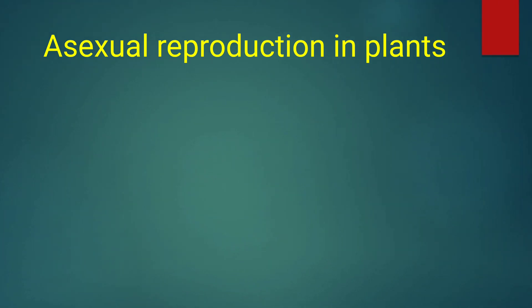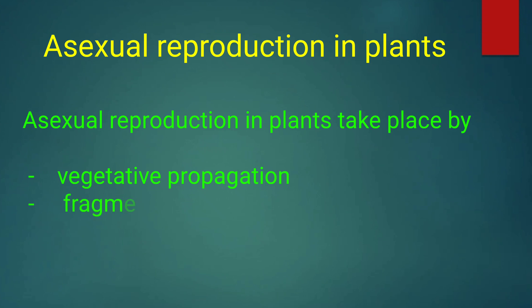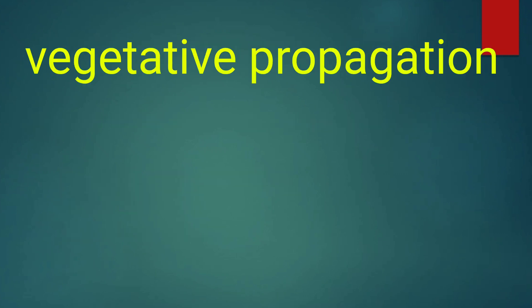Hello friends, welcome to my channel. In this video we discuss about asexual reproduction in plants. Asexual reproduction in plants takes place by vegetative propagation, fragmentation, and spore formation. In this video we will discuss vegetative propagation in plants.